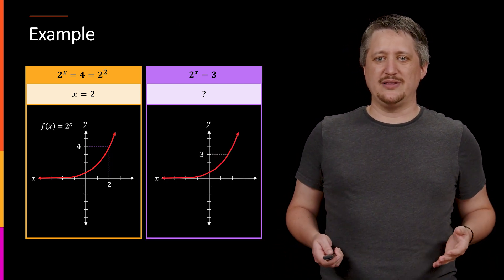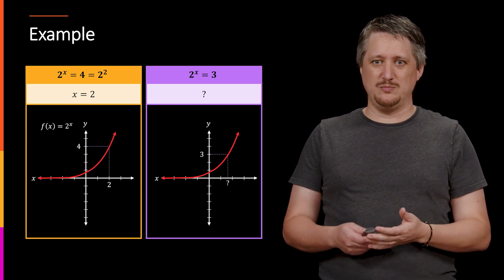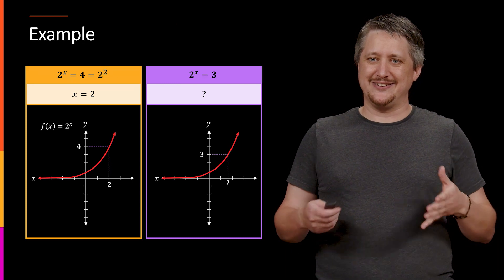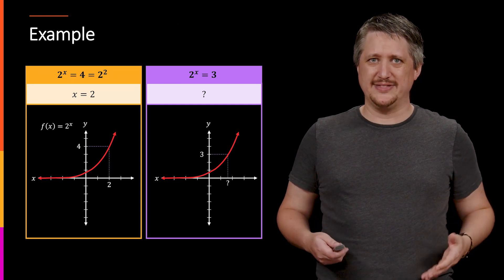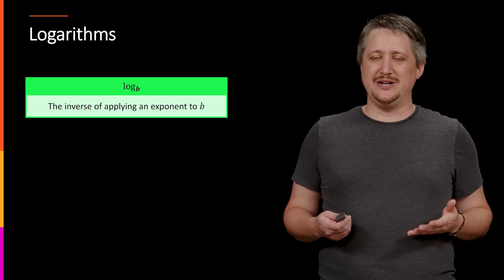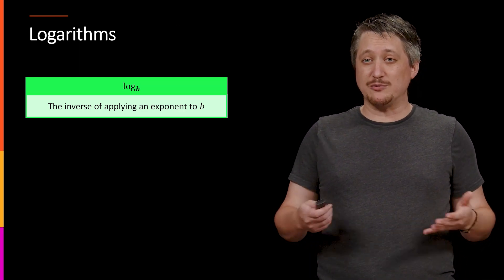But with 3, not so much, right? 3 is a nice y value, but it lands somewhere weird between 1 and 2 on the x-axis. So what do we do with this? Well, this is exactly why we have logarithms. This is literally why they were invented.